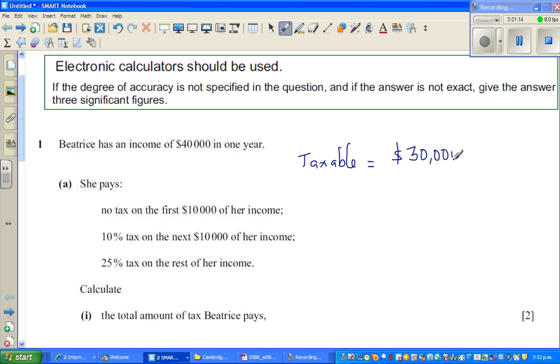So out of this $30,000, she pays 10% on the first $10,000. So 10% of $10,000, you don't need a calculator. 10% is only one tenth. So if you divide this by 10, she's paying $1,000 as tax for the first $10,000.